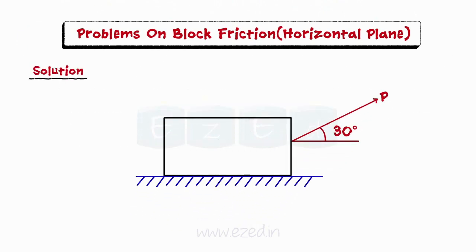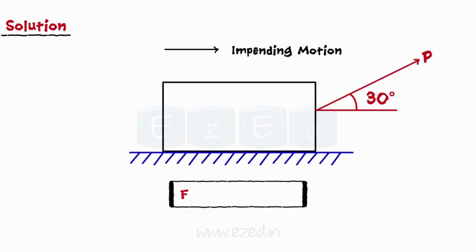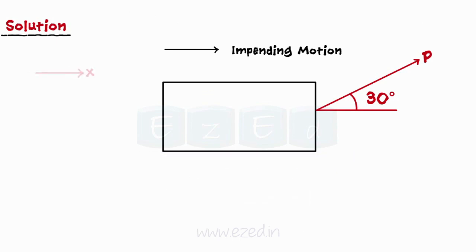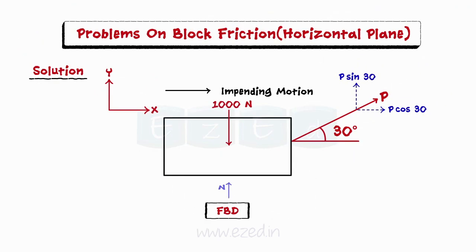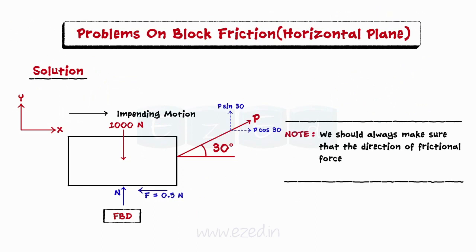This is a simple case of block friction on a horizontal plane. Since the block is on the verge of motion, this is a case of impending motion, and the frictional force will be the product of the coefficient of static friction and the normal reaction offered by the surface. Let us now draw the free body diagram of the block. Kindly note that the direction of frictional force is always opposite to the direction of motion.